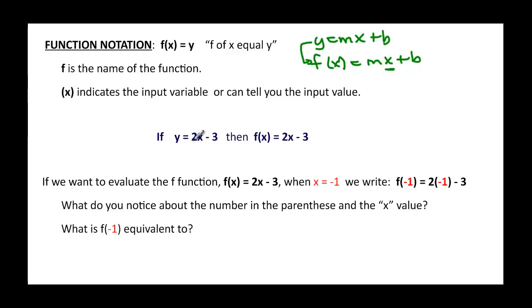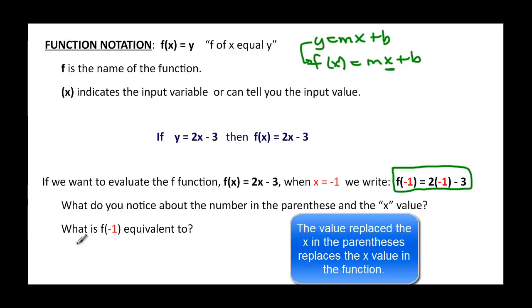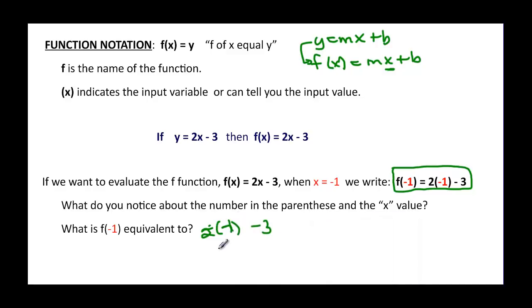So let's suppose that we have y = 2x - 3. Well we can also write that f(x) = 2x - 3. So if we want to evaluate that f function when x is equal to -1, it would look like f(-1) is equal to, and then wherever I see an x, I'm gonna replace it with -1. So f(-1) = 2 times x, which is now -1, minus 3. So it says, what do you notice about the number in the parenthesis and the x value? They are interchangeable. Every x becomes the number inside the parenthesis. And what is f(-1) equivalent to? Well again, that's gonna be 2 times -1 minus 3. And 2 times -1 is -2 minus 3. So it would be -5.